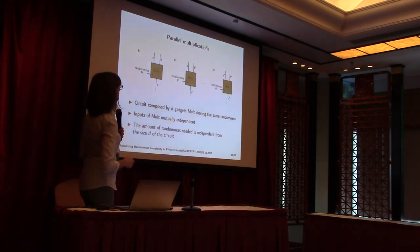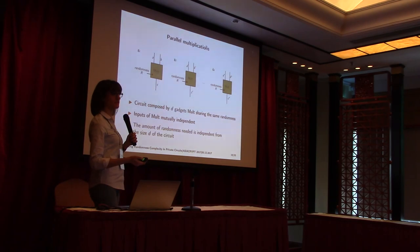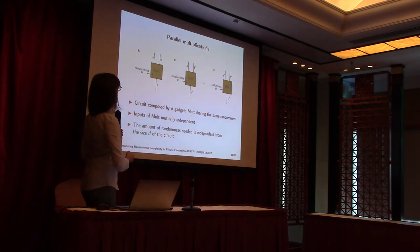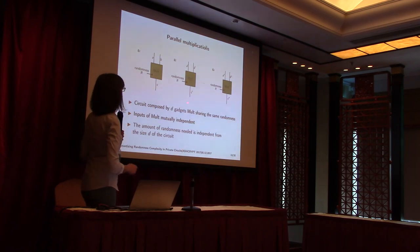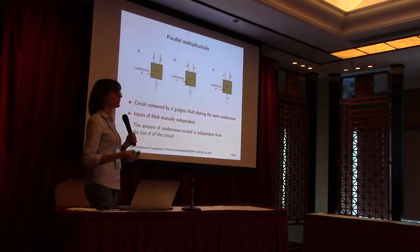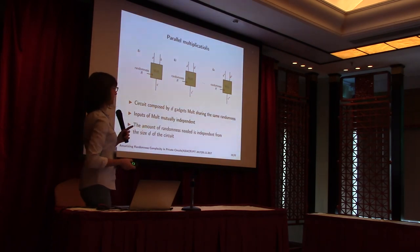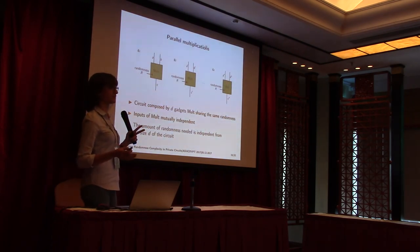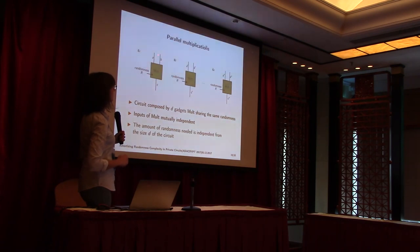An interesting particular case is that of parallel multiplications with independent inputs. In this case we can reuse the randomness inside always. With this method, we can mask the entire circuit with only a fixed amount of randomness, independent of the size of the circuit. However, this is of course a really particular case, and it's not so common to have multiplication schemes with independent inputs.